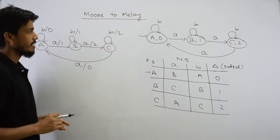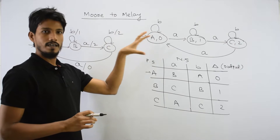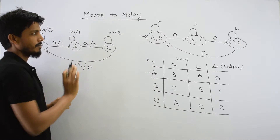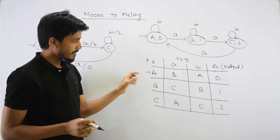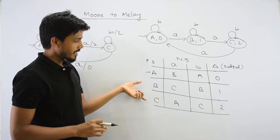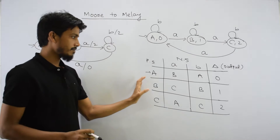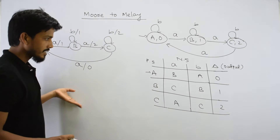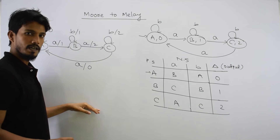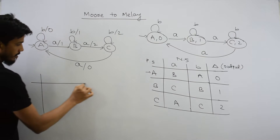So this is your Mealy machine. But in the exam, the question will give you a transition diagram and ask for the corresponding Mealy machine. We will make a transition diagram. But the question could also ask: given a state transition diagram, what is the transition table? So the question is also possible in this form — you will write a transition table directly, or the answer will be your transition table. One way is to draw the corresponding transition diagram first and then write the transition table, but that is lengthy. We can convert directly.